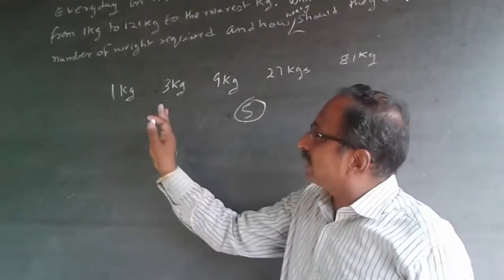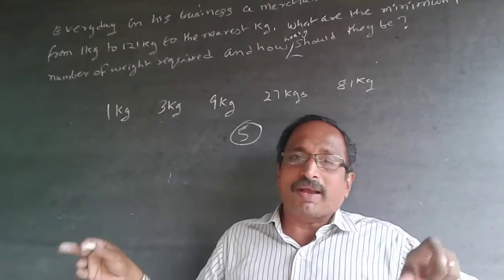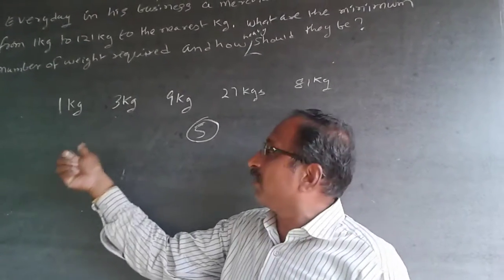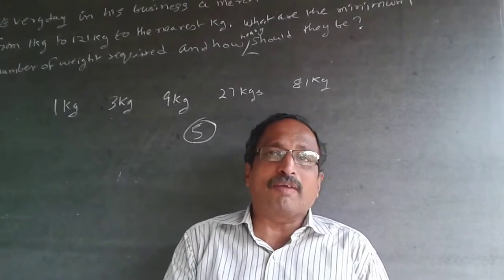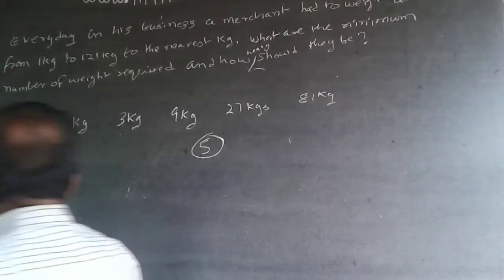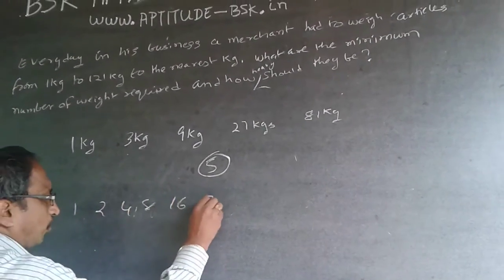But in case they ask you a question that the weights can be put in one pan—I have used the default where I can use both the pans for putting the weight—but if the question is I will use only one pan for putting the weights and articles in the other pan, then it's the power of two. The answer will be seven: 1, 2, 4, 8, 16, 32.